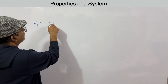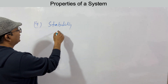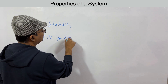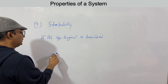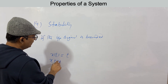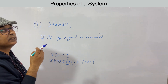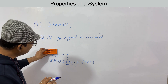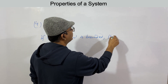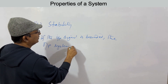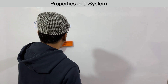The fourth property is stability — one of the most important. If the input signal is bounded, the output should also be bounded. A bounded signal means a small increase in input produces a proportional small increase in output, not a diverging one. For example, in a resistor, a 10% increase in V gives a 10% increase in i.